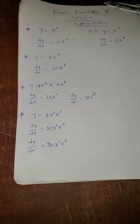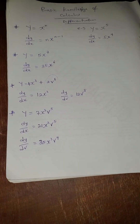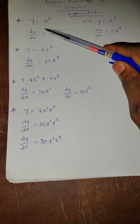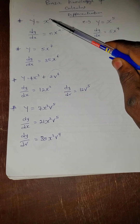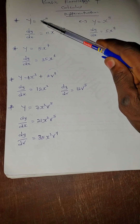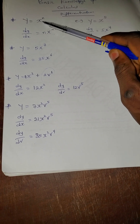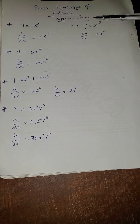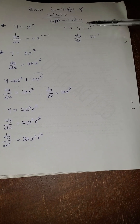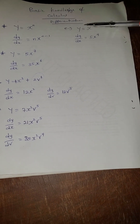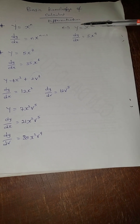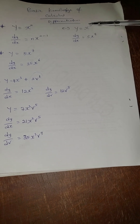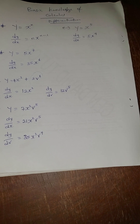Let me start with the basic knowledge about calculus — differentiation. If we are given y = xⁿ, the formula says we multiply the power with the coefficient: n times one, which is n, then x to the power n minus one. For example, if y = x⁵, then dy/dx = 5 times the coefficient (which is one), giving 5x⁴.